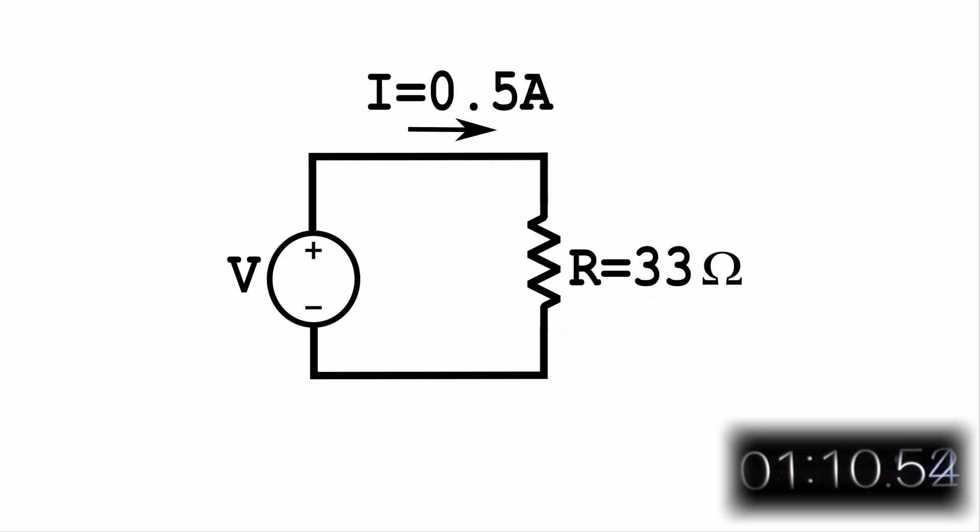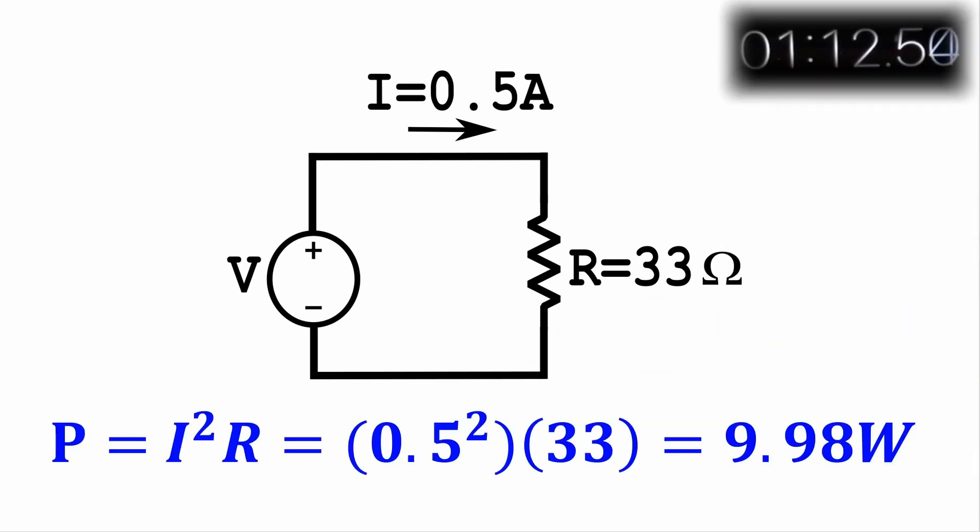As an example, if 500 milliamps goes through a 33 ohm resistor, power is equal to 0.5 squared times 33 equals 9.98 watts dissipated by that resistor.